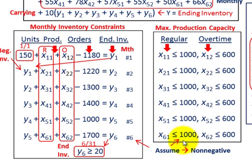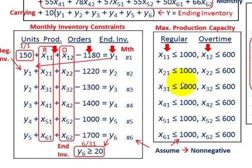Units in ending inventory also can't be negative, so you include a non-negativity constraint for all y variables as well. That's your complete linear program.